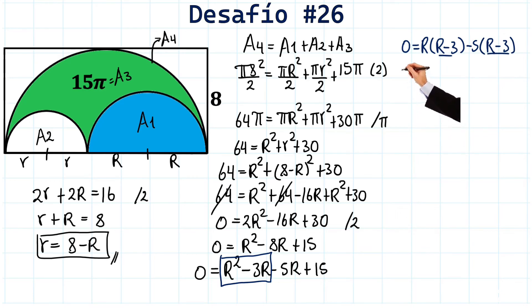And notice here we have two things in common. R minus 3 and R minus 3. We find that 0 is equal to R minus 3. In parenthesis, multiplied by R minus 5. Very well.